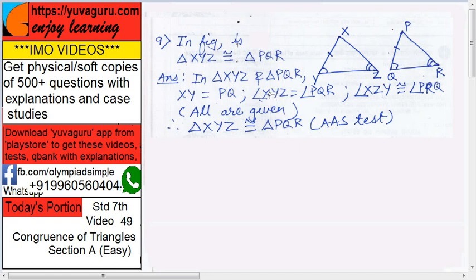Next, angle XYZ equals to angle PQR, congruent, it is given. Then, XZ equals to PR, that is also given here.